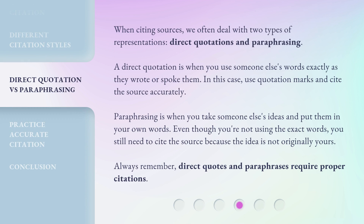When citing sources, we often deal with two types of representations: direct quotations and paraphrasing. A direct quotation is when you use someone else's words exactly as they wrote or spoke them. In this case, use quotation marks and cite the source accurately. Paraphrasing is when you take someone else's ideas and put them in your own words. Even though you're not using the exact words, you still need to cite the source because the idea is not originally yours. Always remember, direct quotes and paraphrases require proper citations.